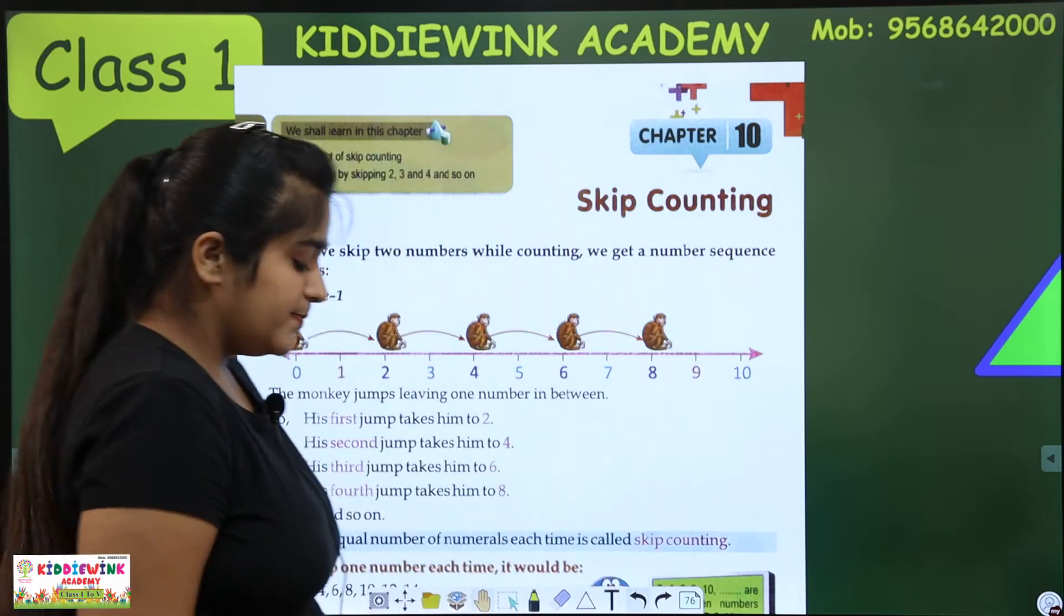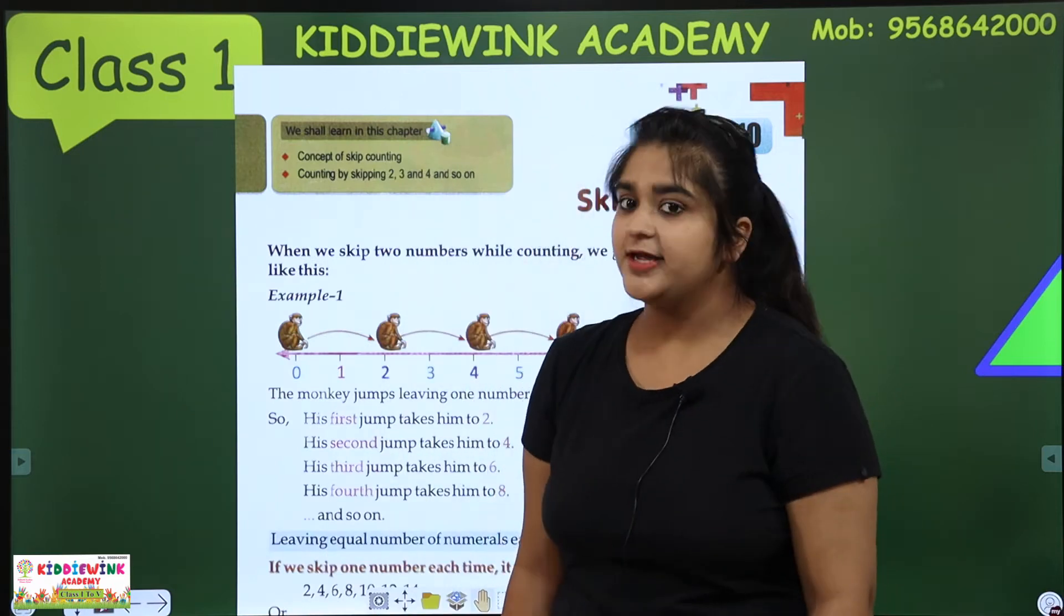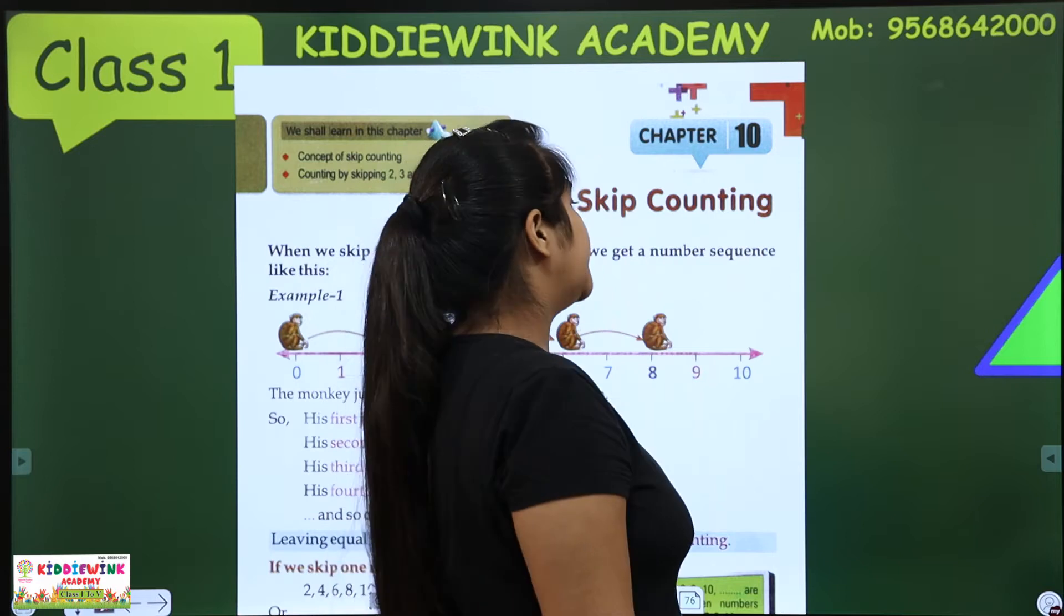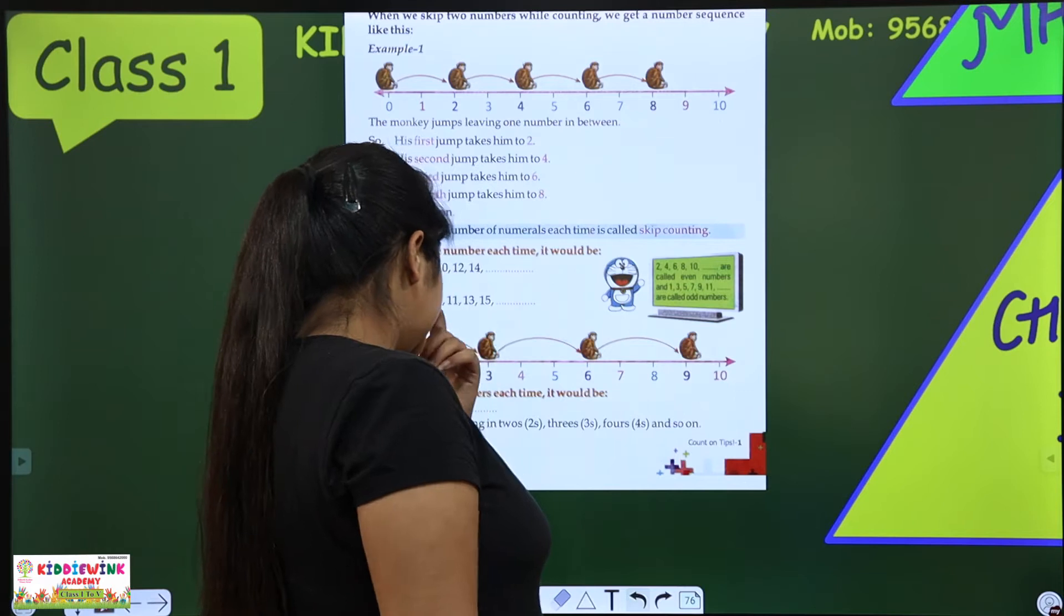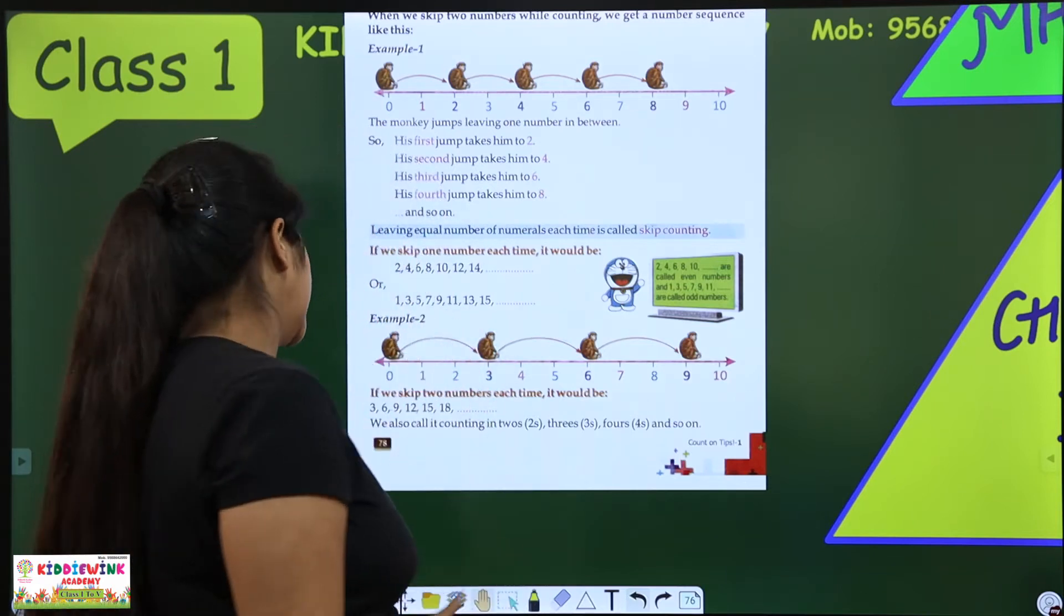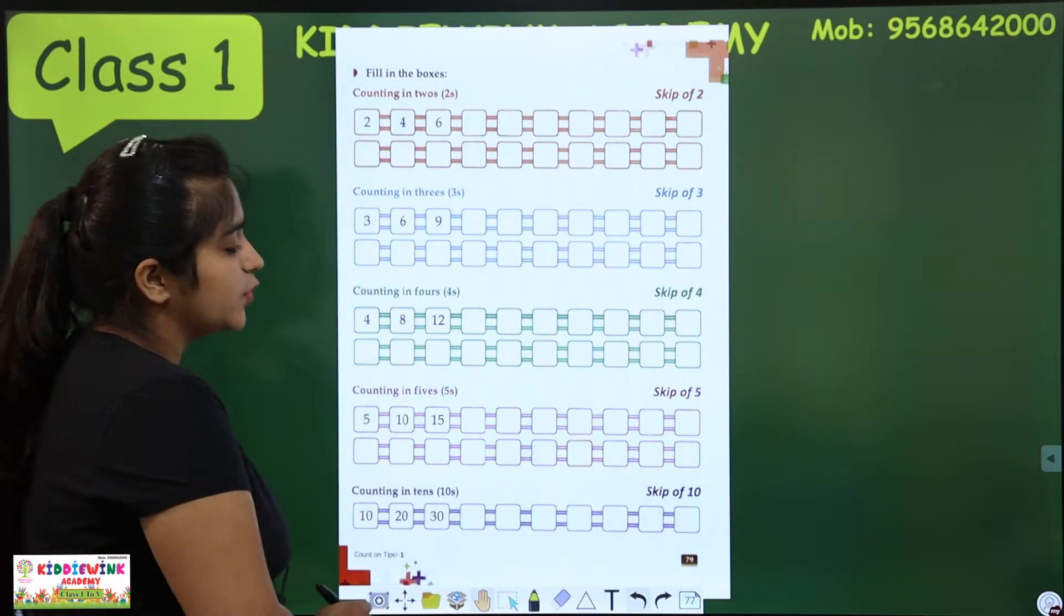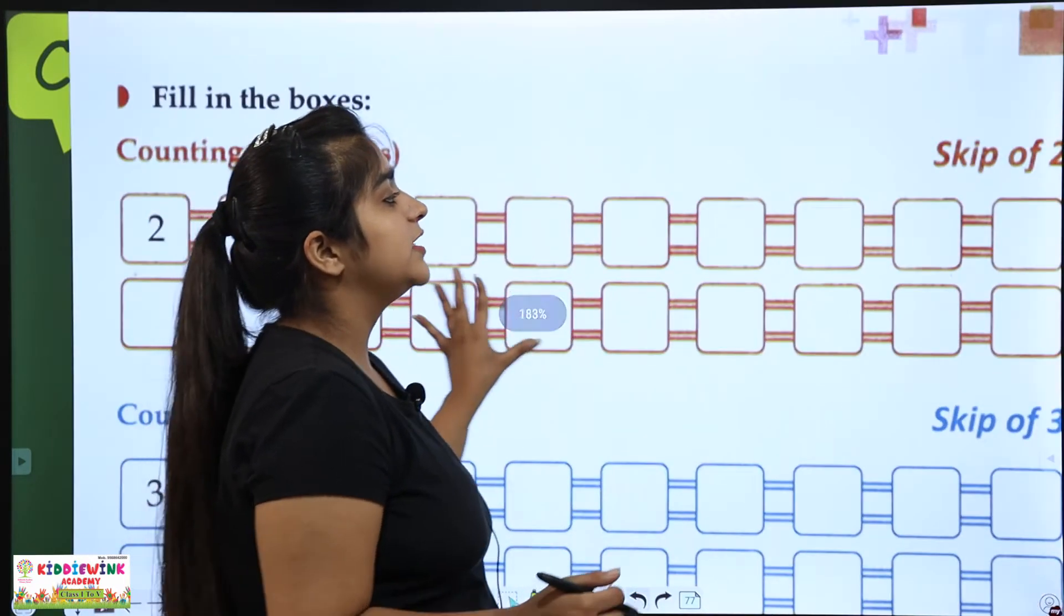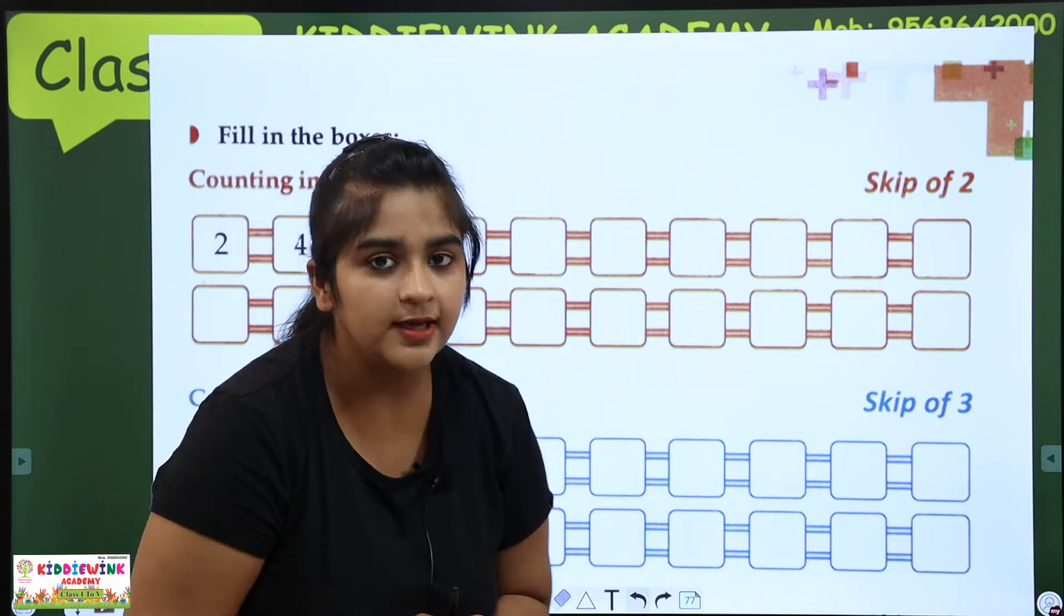Skip means I have skipped one block. One block skipped. Second, third block. Skip means skip counting. So we will not see page number 78, we will come to page number 79. We have a table of 2, 3, 4, 5, 10. But we need to learn Skip Counting Table. Skip counting means leave the gap as much as possible.